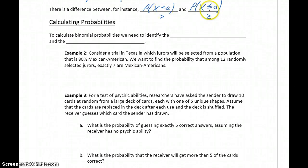Keeping in mind the importance of our probability statements, distinguishing between strict inequalities and less than or equal to, greater than or equal to statements, let's look at calculating some probabilities using StatCrunch.